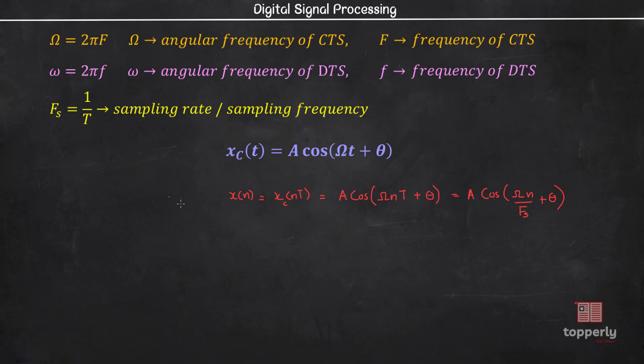Now we know that a general discrete time sinusoidal signal is expressed as X of n equal to A cos small omega into n plus theta. Comparing these two equations, we get small omega equal to capital omega by Fs, which is also equal to capital omega into capital T.